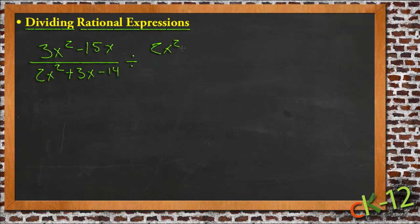So we'll have 2x squared plus 13x plus 21 over x squared minus 25.